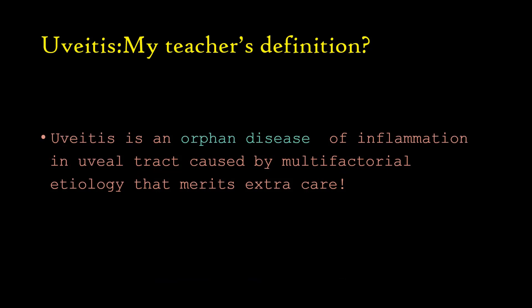Now, the definition of UVA disease is really funny and interesting. My teacher used to say: UVA disease is an orphan disease of inflammation in the uveal tract caused by multifactorial etiology that merits extra care. What's the big deal? You might think, why are you boring us with this definition? But each word is so important.